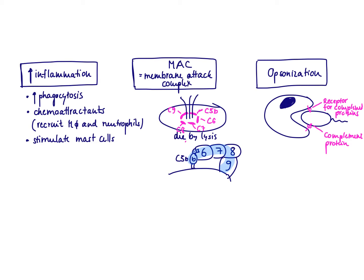The third effector mechanism is opsonization, which just means making things easier and tastier to eat. When a macrophage is trying to eat a bacteria, sometimes the bacteria is very slippery and slips out of its mouth. Once there are opsonins around, they settle on the bacteria, and there are corresponding receptors on the surface of the macrophage that fix the bacteria, making it easier to eat. In summary, opsonins are like the marmalade on the bread for the macrophage.